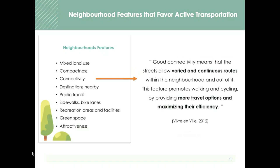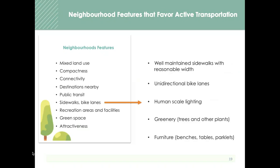You can have a community with mixed uses and compactness, but if there's not good connectivity — streets, sidewalks, and cycling infrastructure — it can still be challenging for people to get around. Good connectivity means streets allow for varied and continuous routes within and out of the neighborhood. Other examples of good quality planning include well-maintained sidewalks with reasonable width and accessible curb cuts, appropriate cycling infrastructure, human-scale lighting at the pedestrian level, greenery, furniture, benches, tables, and parklets. If all of these features are combined and planned with citizens, it encourages residents to walk, bike, and be active on a daily basis.